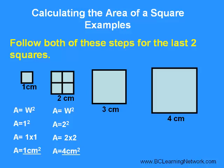Now, I want you to follow these two steps for these last two squares. First, picture how many unit squares would fit inside and then confirm your answer by using your area formula, A equals W squared.